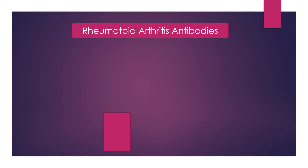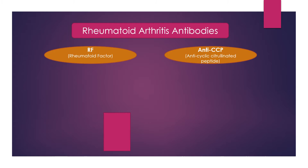Today we're talking about rheumatoid arthritis antibodies, specifically RF — rheumatoid factor — and anti-CCP, which is anti-cyclic citrullinated peptide, sometimes referred to as CCP antibodies, even though the technically correct term is anti-CCP.